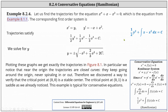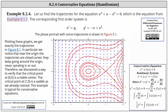Therefore, the trajectories must satisfy the equation one half y squared plus one half x squared minus one third x cubed equals c. Solving for y, we first multiply through by two, then take the square root of both sides of the equation. We do have to include a plus or minus, giving us y equals plus or minus the square root of the quantity negative x squared plus two-thirds x cubed plus 2c. Plotting these graphs, we get exactly the trajectories in figure 8.1 shown here.